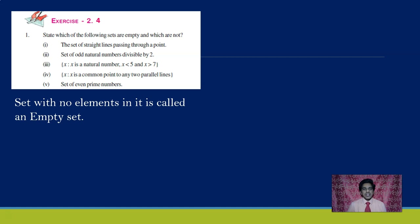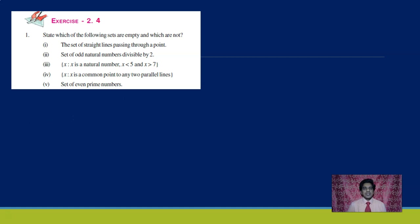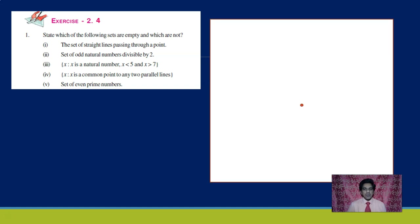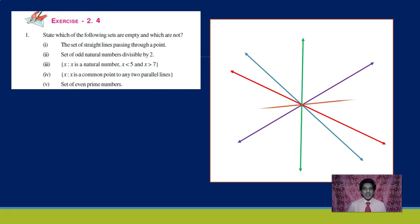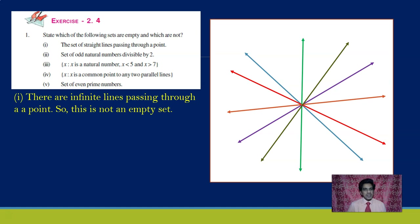Look at the first question: the set of straight lines passing through a point. We need to check if this set is empty or not. Suppose you have a plane and a point under consideration. Now, can we draw straight lines passing through this point? In fact, we can draw as many straight lines as we want. So this is not an empty set — it is actually an infinite set.